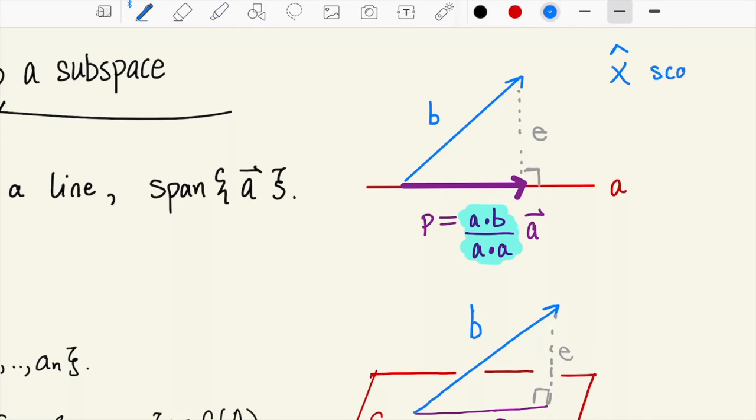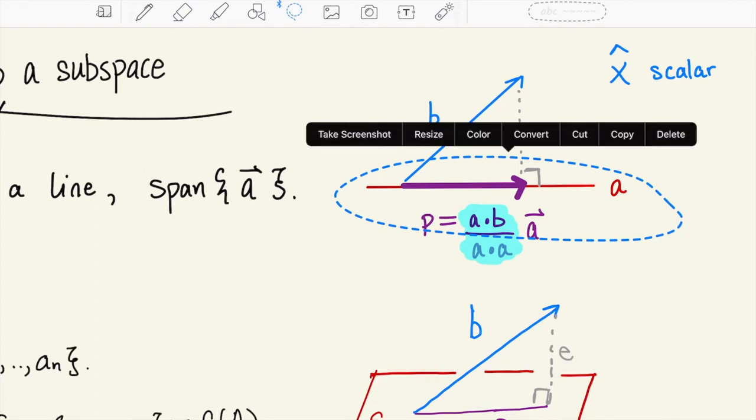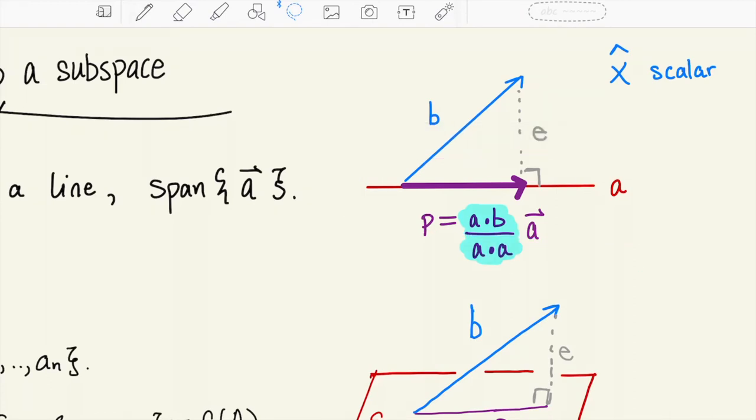It's a scalar and it's the amount that you multiply the vector a by, shrinking it out or shrinking it back, so that you get this exact projection that we have schematically represented by the purple vector. It's the best approximation of the blue vector b that lives on the red vector a.